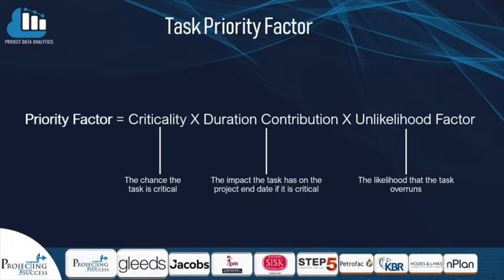In order to identify which tasks on the program are most important to target, we produced a priority factor. We did a few of these priority factors using the different metrics available in the data, but the most reliable one we found was based on the criticality — the chance that the task was on the critical path in the many simulations that were done — multiplied by the duration contribution. This was the impact that task could have on the project end date if it was critical, and we also multiplied it by the unlikelihood factor, which was the likelihood that the task would overrun.